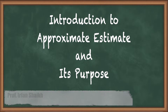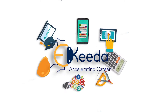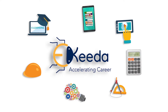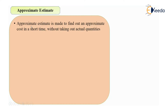So how can you define approximate estimate? An approximate estimate is made to find out an approximate cost in a short time. If someone — a client or an owner — asks you as an engineer what the probable cost of their structure will be in a short time, you can use the approximate estimate to provide that.